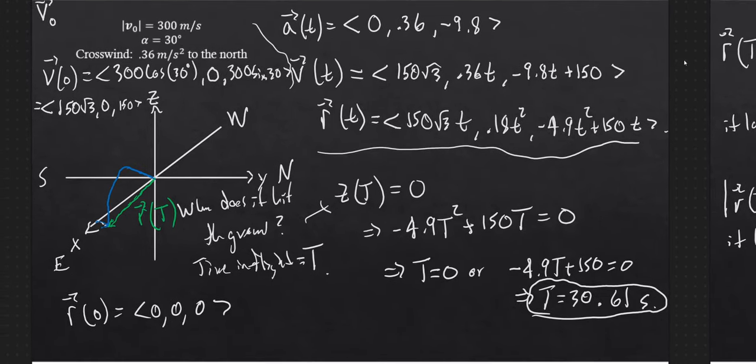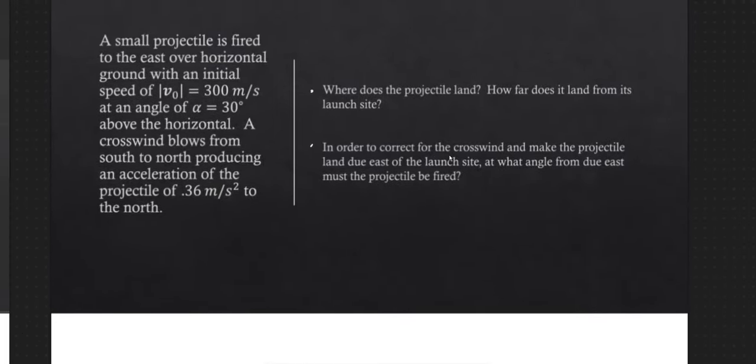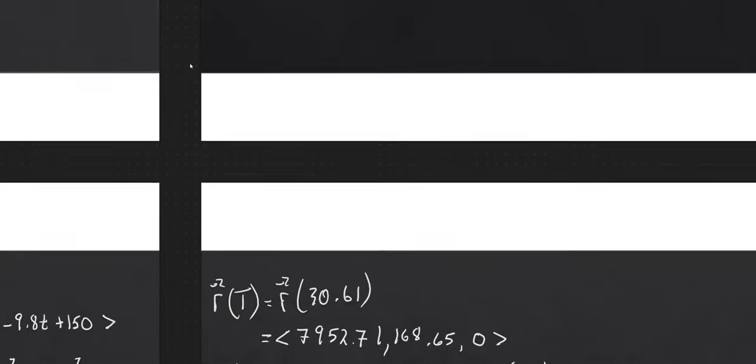The second part requires a bit of ingenuity. In order to correct for the crosswind — if we want the projectile to land due east of the launch site — we need to find the angle from due east at which to launch it. It's always a good idea to draw the situation first; this helps inform you about where to start.